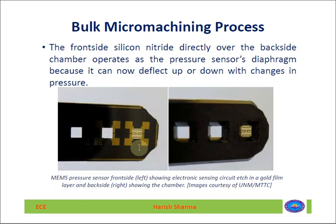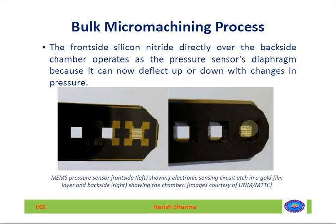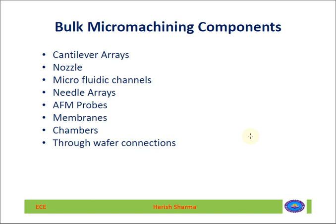As you can see in the picture, the front side silicon nitride directly over the backside chamber operates as a pressure sensor. You can see the circuit designed in gold on the front side, and on the back side you can see the chamber with the silicon nitride layer. Since the silicon nitride is open from the backside, it is free to move and acts as a pressure sensor diaphragm — it can deflect on both the front and back sides.